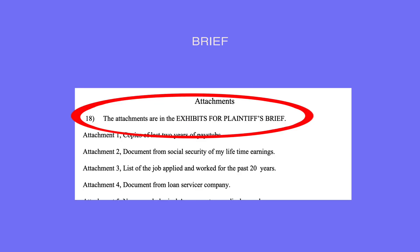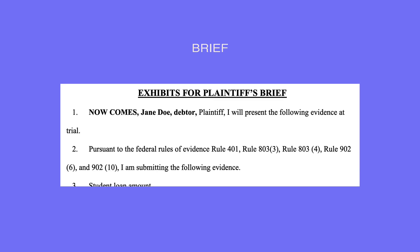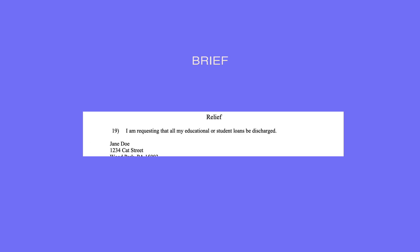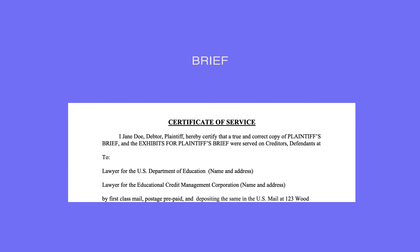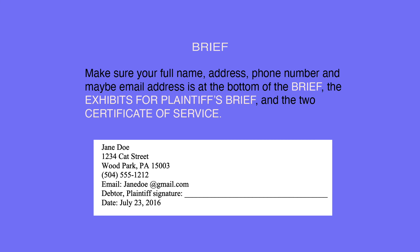Next, state what documents are in the attachment. You will probably have a lot of evidence. The best thing to do is create an Exhibits for Plaintiff's Brief and attach all the evidence to it. We provide an example of the Exhibits for Plaintiff's Brief on our website. Next is the relief section. You write: 'I am requesting that all my educational or student loans be discharged.' Don't forget to create a Certificate of Service for the Brief and the Exhibits for Plaintiff's Brief. Then make sure your full name, address, phone number, and maybe email is at the bottom of the Brief, the Exhibits for Plaintiff's Brief, and the two Certificates of Service.